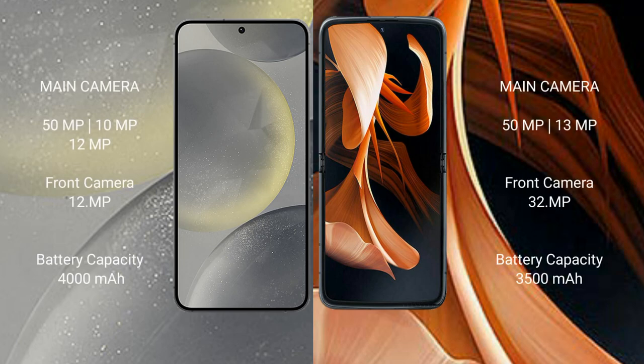Samsung Galaxy S24 features a triple camera setup: 50MP plus 10MP plus 12MP, with a 12MP front camera. Motorola Razr features a dual camera setup: 50MP plus 13MP, with a 32MP front camera.